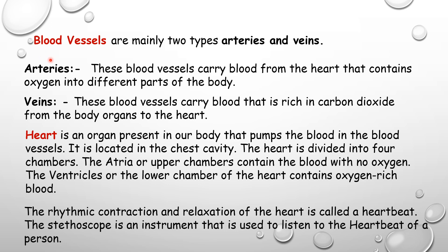The circulatory system consists of three important parts: blood, blood vessels, and heart. Blood vessels are mainly of two types — arteries and veins. Arteries carry blood from the heart that contains oxygen to different parts of the body — oxygen-rich or pure blood. Veins carry blood rich in carbon dioxide from body organs back to the heart.